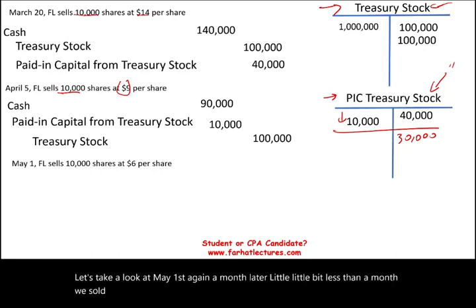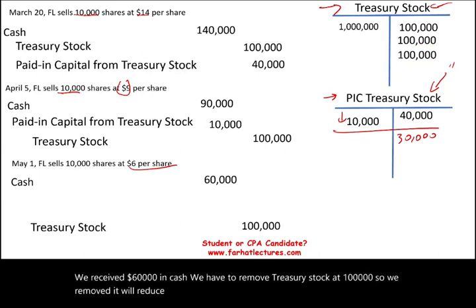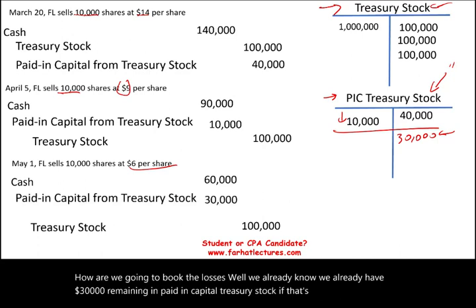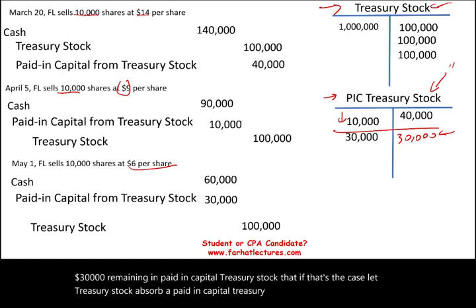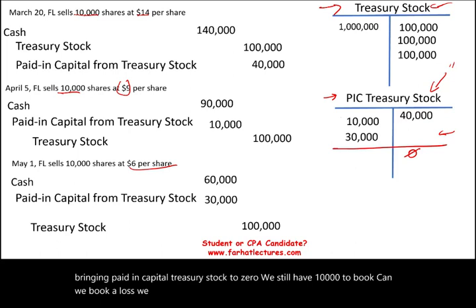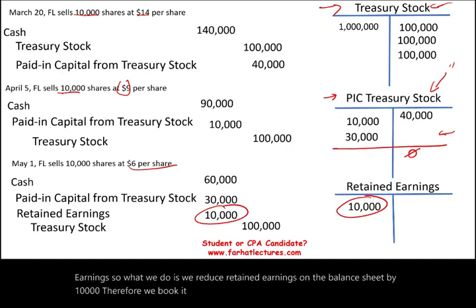On May 1st, we sold another 10,000 shares at $6. We received $60,000 in cash, remove treasury stock at cost — $100,000 — resulting in a $40,000 loss. We let Paid-in Capital Treasury Stock absorb $30,000, bringing it to zero. We still have $10,000 remaining to book. We cannot let this hit the income statement, so we reduce Retained Earnings on the balance sheet by $10,000.